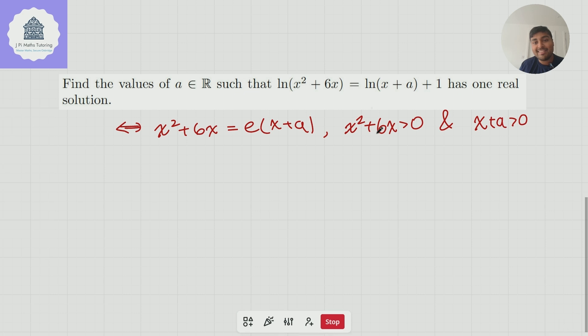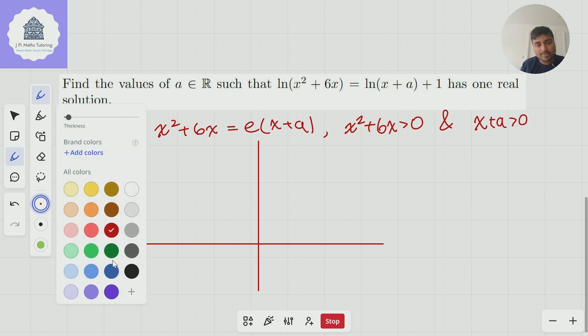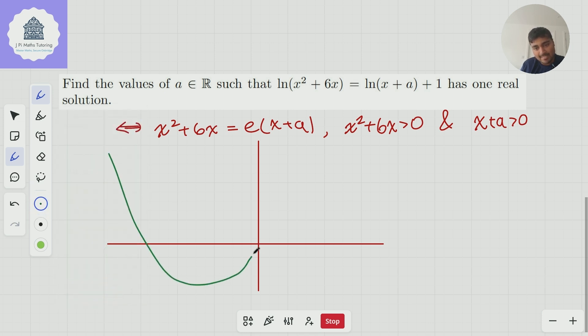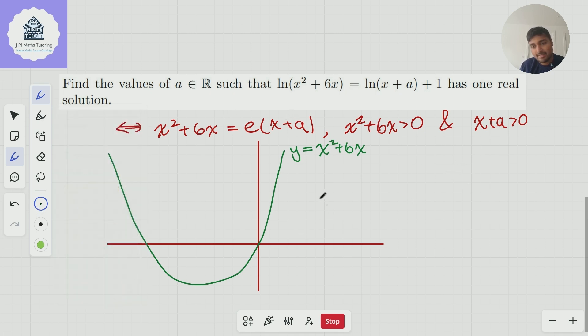Now this is why it's a bit fiddly to just set the discriminant to zero because you've got all these small little conditions we've got to be mindful of. How are we going to solve this? Well with a picture of course. Let's sketch y = x² + 6x. Looks like that. And now let's sketch y = ex + a, which is obviously going to be a straight line with gradient e.